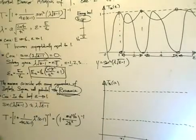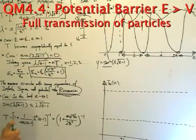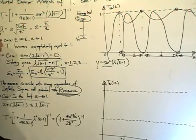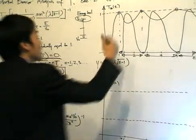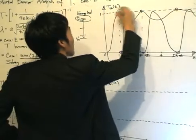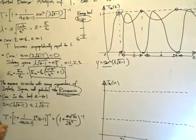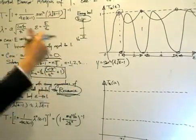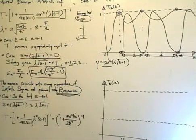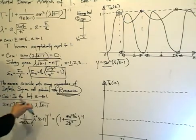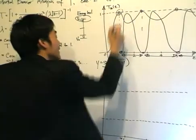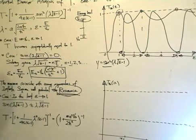Now case number 3: in the limit when epsilon tends towards 1, epsilon cannot equal 1. So technically, this value does not exist. Why is that? Because as you can see, the energy has to be greater than the potential — it cannot equal the potential, which is what occurs when epsilon equals 1. But what I can do is let epsilon tend towards 1 to find what the transmission coefficient is at that point.